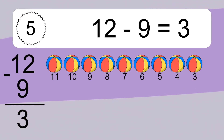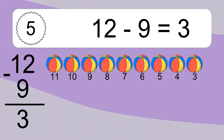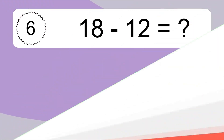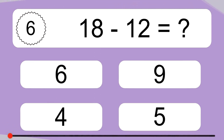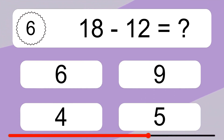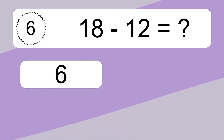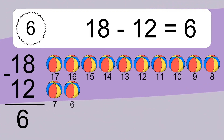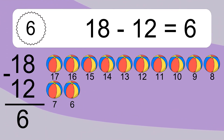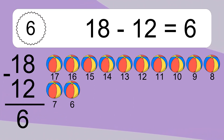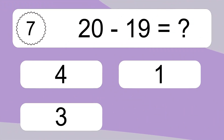18 minus 12 equals what? 18 minus 12 equals 6. Let's count it: 17, 16, 15, 14, 13, 12, 11, 10, 9, 8, 7, 6.